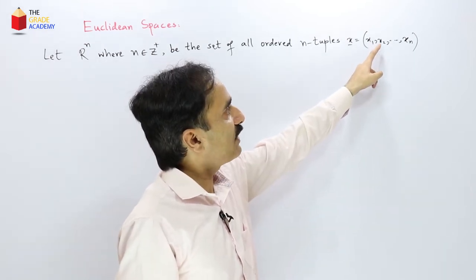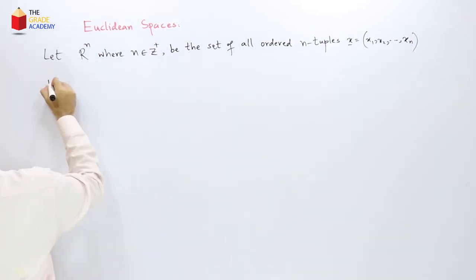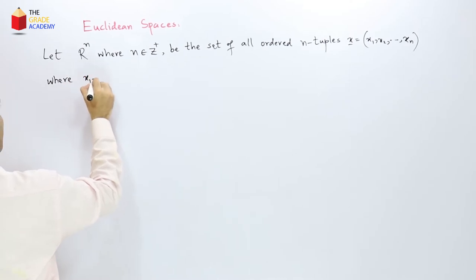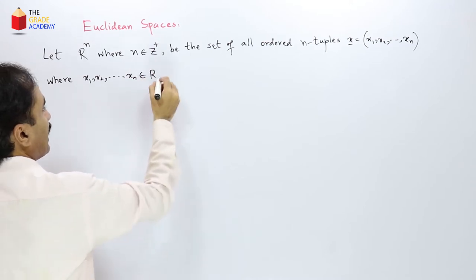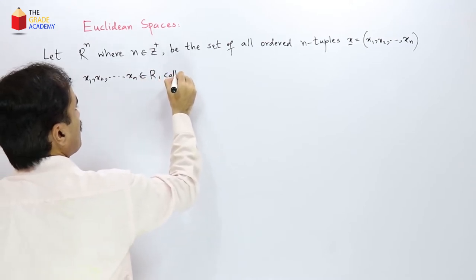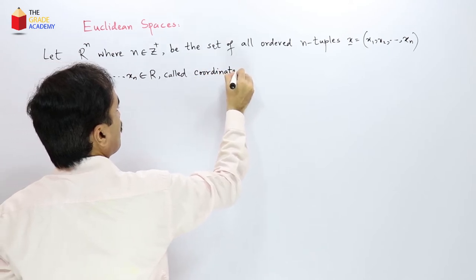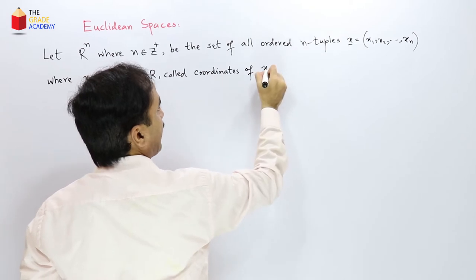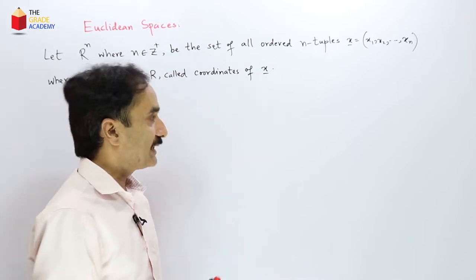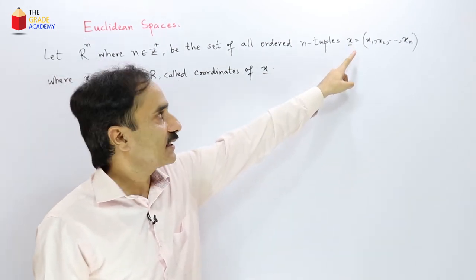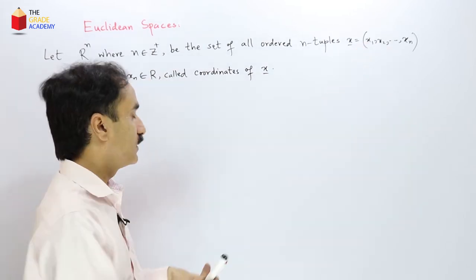So where these x1, x2 up to xn are real numbers and these are called coordinates of that element x of Rn. And this element of Rn x is called a point or vector in Rn.